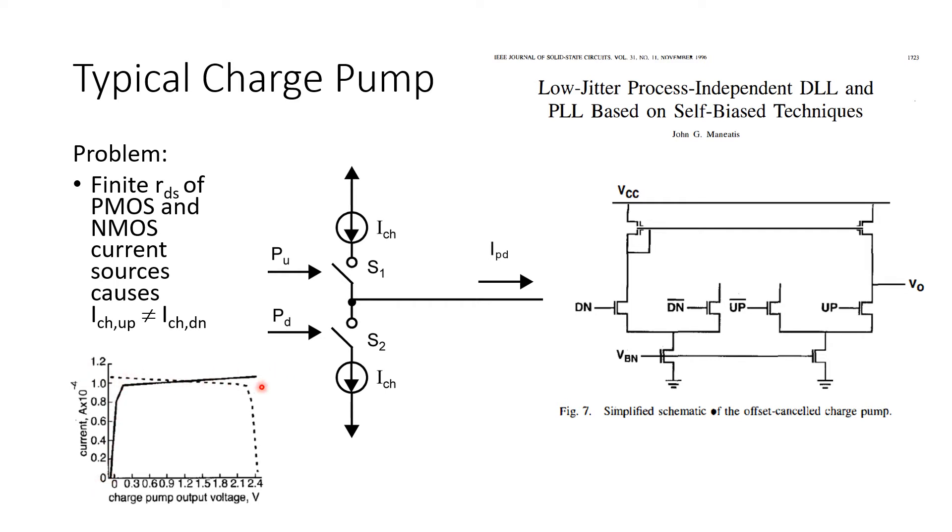Now at the extreme voltages very close to ground or very close to the supply voltage, one or the other of the current paths will stop working properly. The transistors want to go into triode and currents will vary drastically.